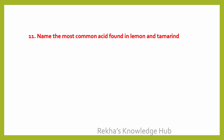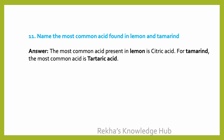Name the most common acid found in lemon and tamarind. The most common acid found in lemon is citric acid. For tamarind, the most common acid is tartaric acid.